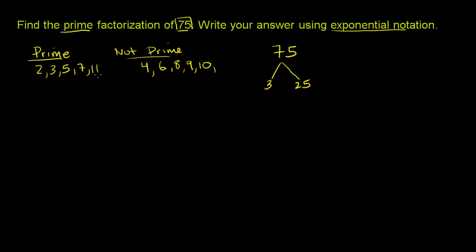So we keep moving up. Is 25 divisible by 5? Well, sure, it's 5 times 5. So 25 is 5 times 5.